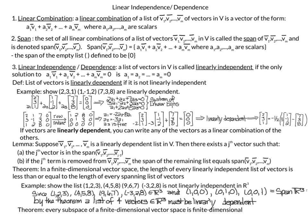Next we will talk about linear independence and linear dependence. A list of vectors in a vector space V is called linearly independent if the only solution to the homogeneous equation — a1·v1 + a2·v2 + ... + am·vm = 0 — is the trivial solution, where all the a_i are equal to zero. The trivial solution in mathematics means zero. A list of vectors that is not linearly independent will be called linearly dependent.